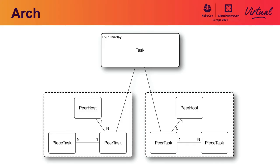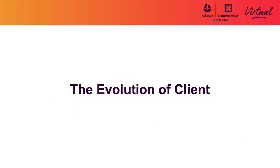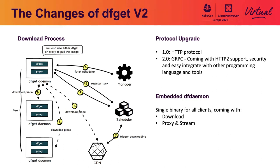Hello everyone, I am Jin Ma from Ant Group. Let's talk about the evolution of clients. The usage of DFGET is similar to V1 — it can download files with P2P network. There are some significant changes in DFGET V2. The first change is the download process: in V2, we split SuperNode into Scheduler and CDN, and add Manager for multi-cluster configuration support.